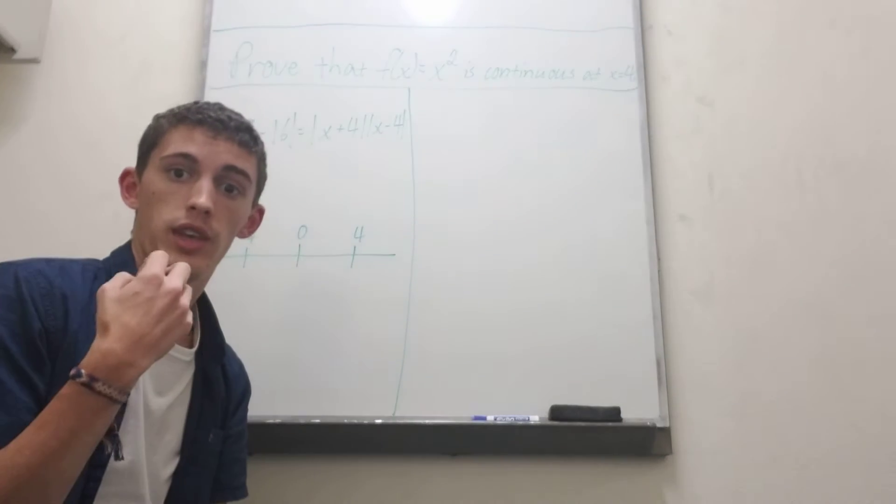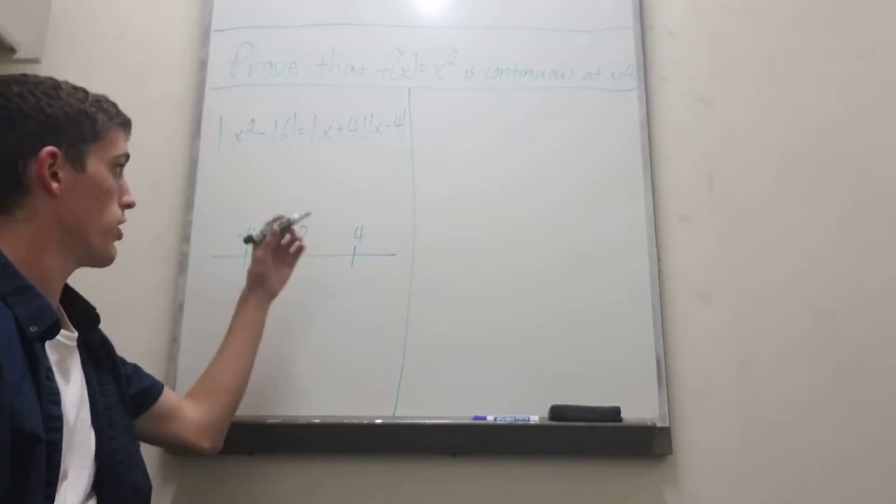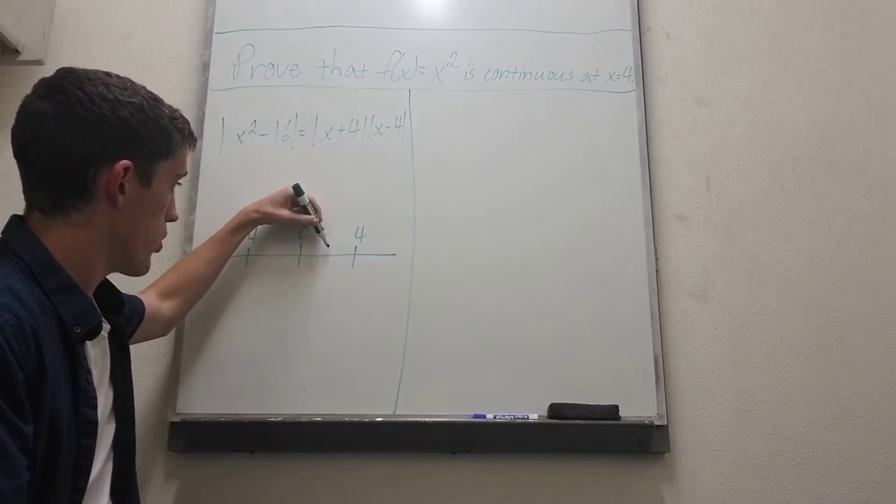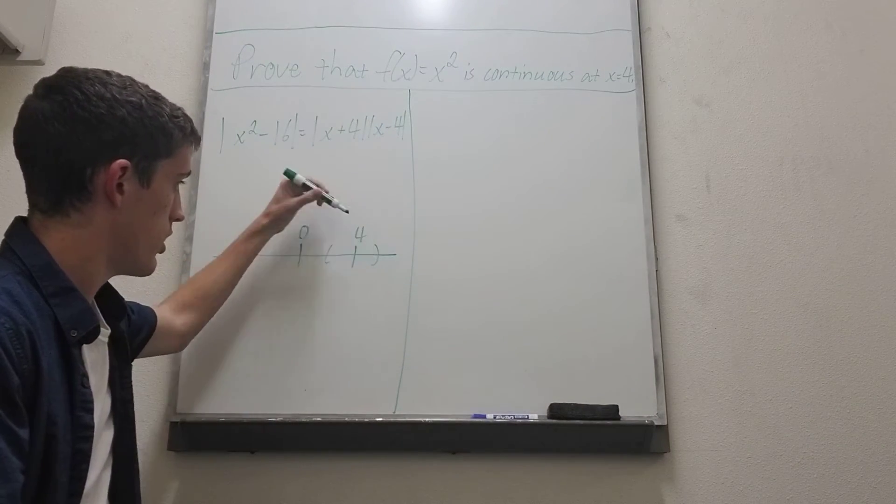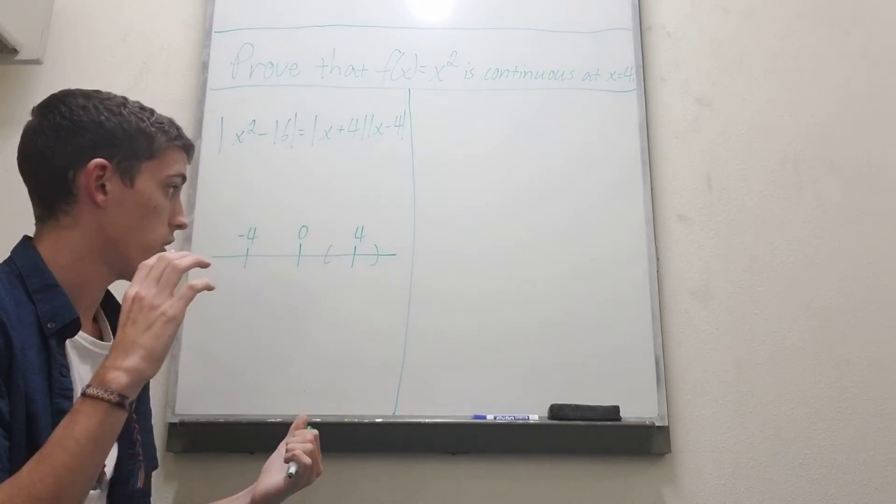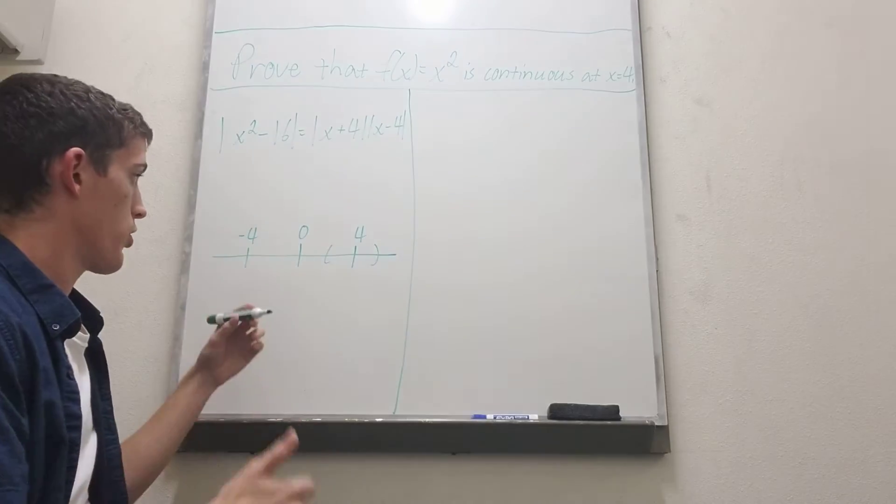Now whenever we're thinking about a limit we're thinking about getting really close to the value, in this example 4. So when we do that we can certainly restrict our x values to be within at least one of x equals 4.